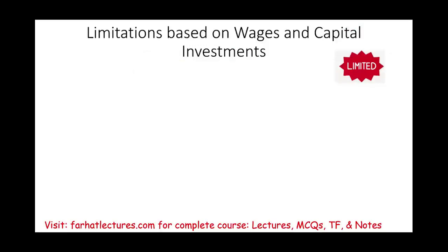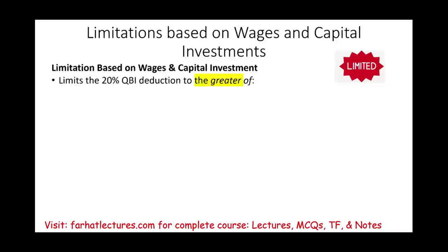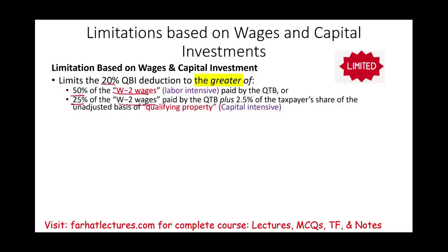Let's talk about the limitation based on wages and capital investment. Once you exceed the threshold, the limit on the 20% QBI deduction is the greater of: (A) 50% of W-2 wages — assuming you are a labor-intensive company with many employees — or (B) 25% of W-2 wages paid plus 2.5% of qualifying property. You take the greater of these two and then compare it to the 20% of QBI.